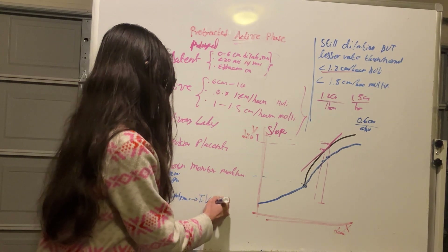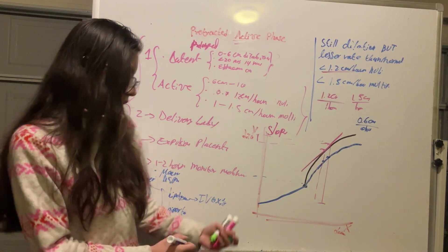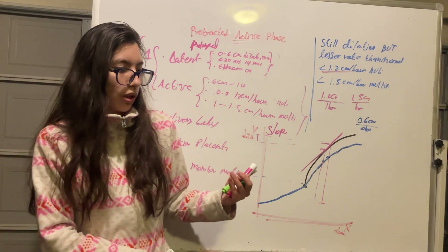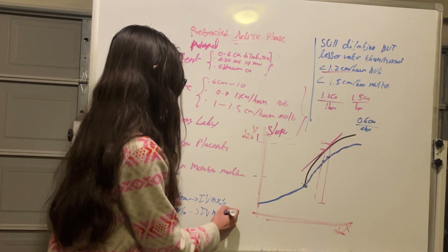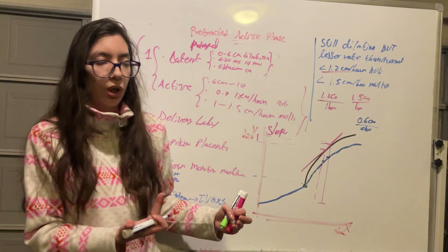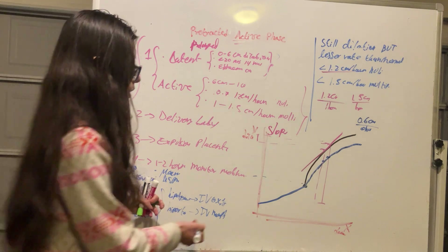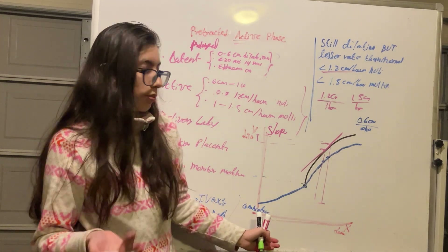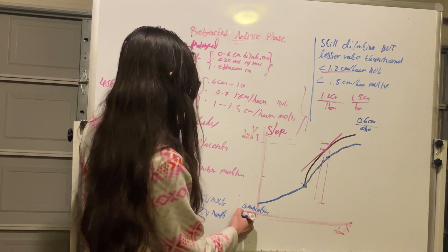Power abnormality refers to the contractions. A hypotonic contraction has short duration, low frequency, and low intensity — for this we give IV oxytocin. A hypertonic contraction has high intensity but short duration and poor frequency (less than one every two to three minutes) — for this we give IV morphine, because the intensity is too high. If neither works, we can try amniotomy, which is rupture of the membranes to stimulate further cervical dilation. If this also fails, a C-section is performed.